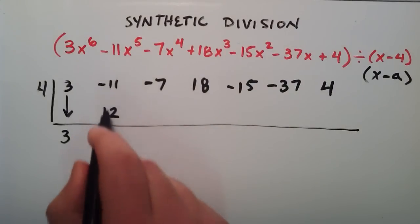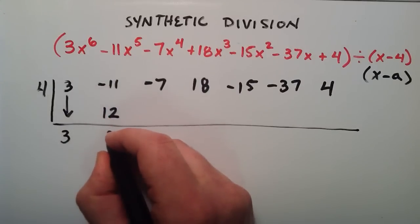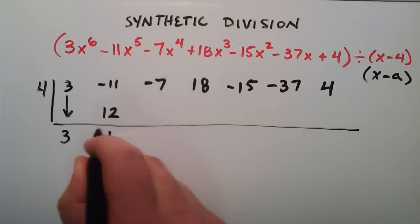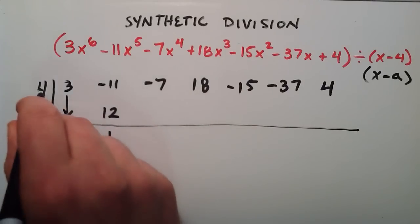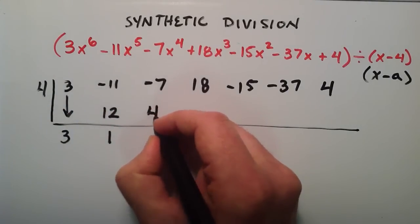So then we add these two together. So a negative 11 plus a 12 is going to give us a positive 1. And then once again, we multiply this times our a term. 1 times 4 is 4. And we write that in the next available space.